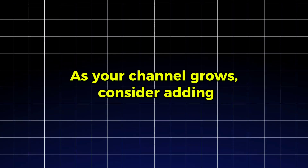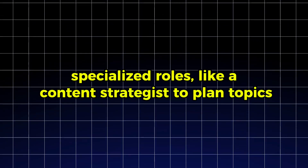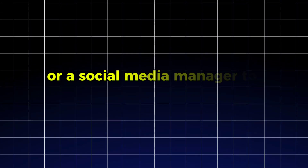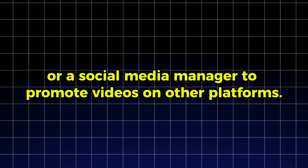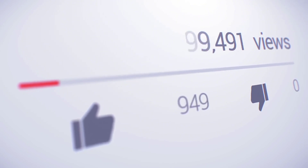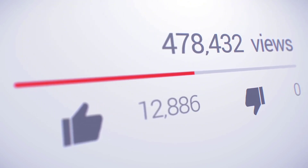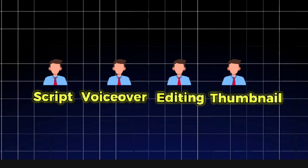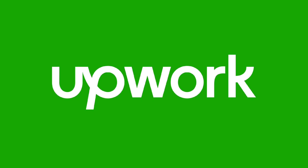Communication is key. Hold regular check-ins with your team to address challenges and ensure everyone is aligned with your vision. As your channel grows, consider adding specialized roles, like a content strategist to plan topics or a social media manager to promote videos on other platforms. By delegating these tasks to experts, you not only enhance the quality of your content but also free yourself to focus on strategy, audience engagement, and scaling your business. This team-centric approach is the backbone of YouTube automation success. Platforms like Fiverr, Upwork, and Freelancer are great places to find talented individuals for these roles.